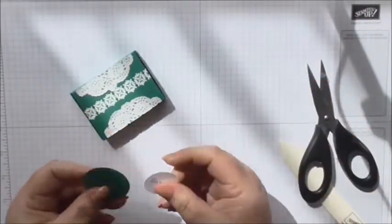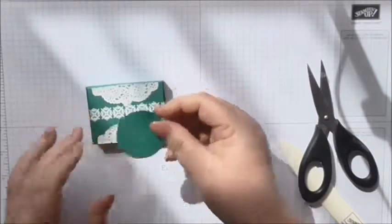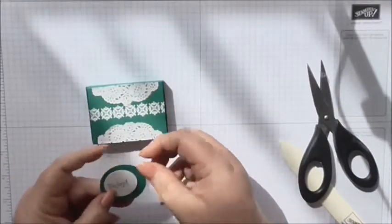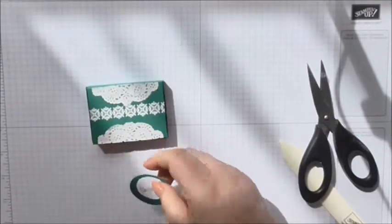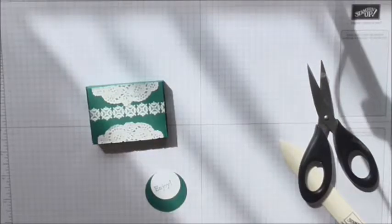And then what I've done for the tag is I've just got a piece of green Tranquil Tide and I'm now just going to—I'm just going to take my single hole punch.